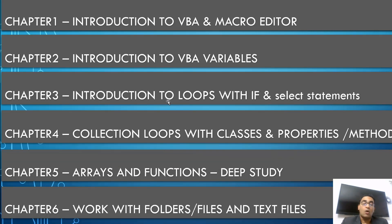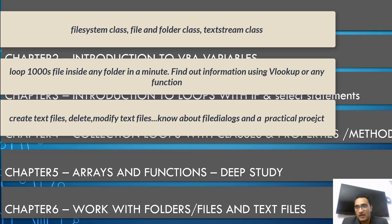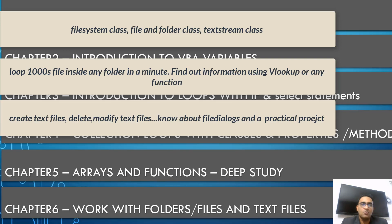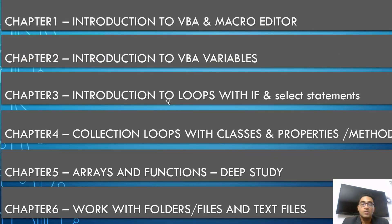Then we cover how to work with folders, files, and text files — how to create and modify text files, and how to loop through folders. For example, if your D Drive has 500 Excel files and you need to search for employee IDs across them, you can't do that manually. This is where the Scripting Library and the FileSystemObject class come into action.